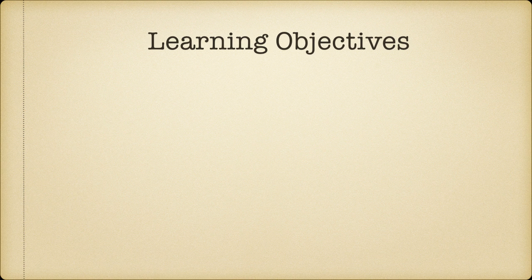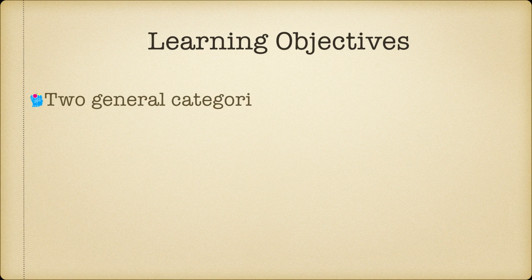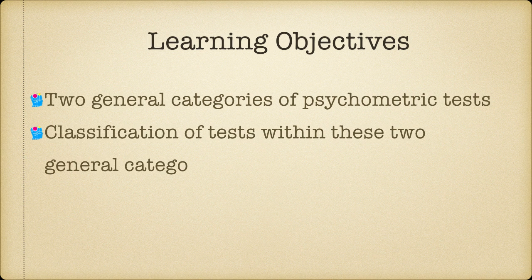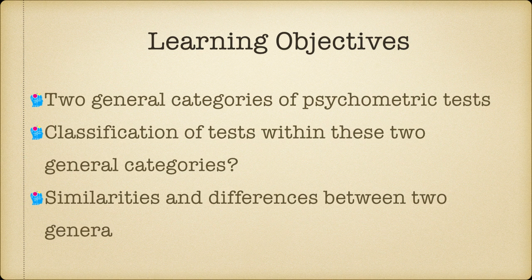In this module we will talk about two general categories of psychometric tests. We will talk about the similarities and differences among these two categories and we will look at different ways of classification of tests within these categories. There are multiple ways to classify psychometric tests and different test developers and test publishers use different taxonomy. We will present here the taxonomy which is most commonly used.